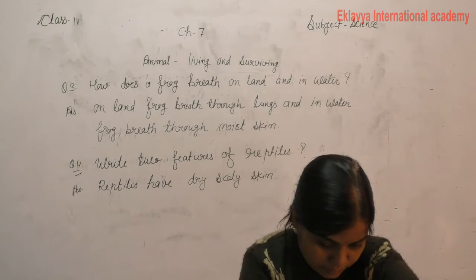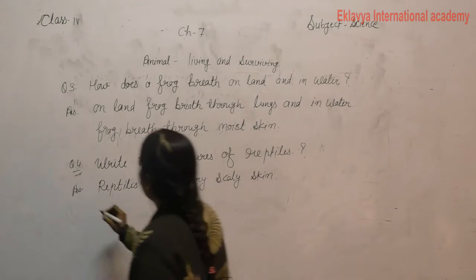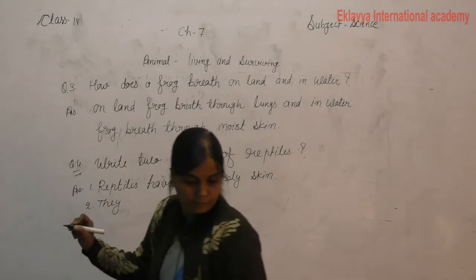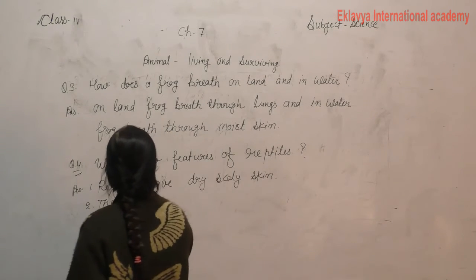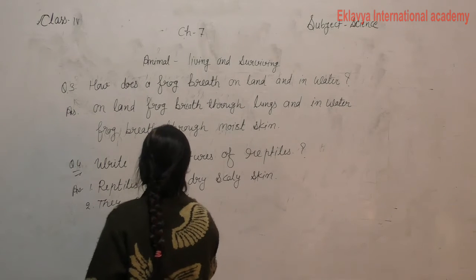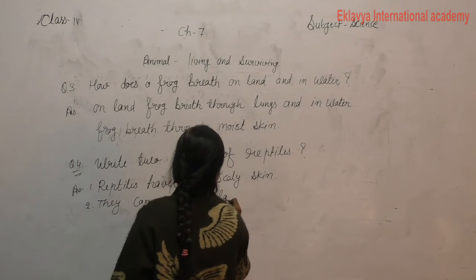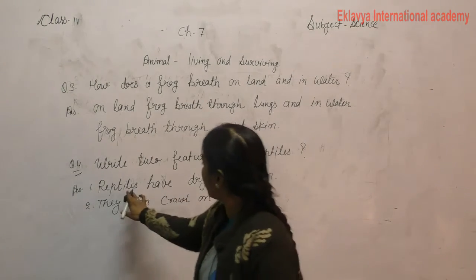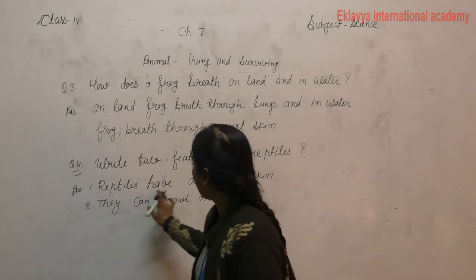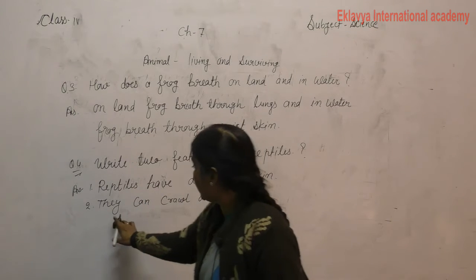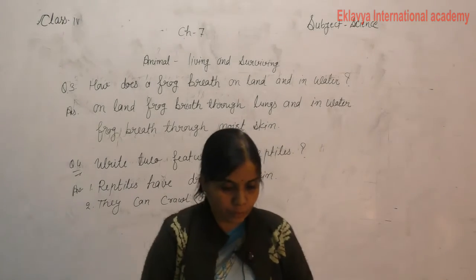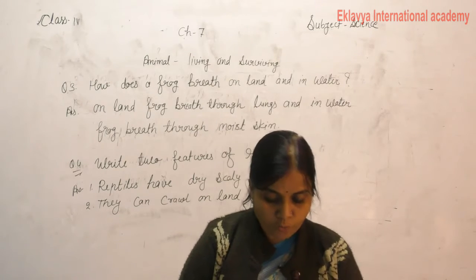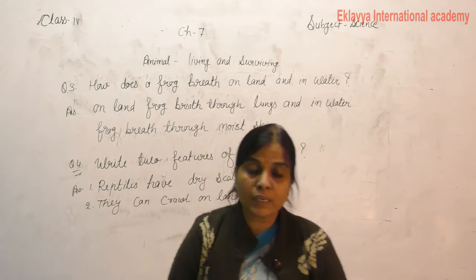Next, they can crawl on land. Write two features of reptiles. Reptiles — for example, each of insects and worms. Insects or worms, two-two examples.